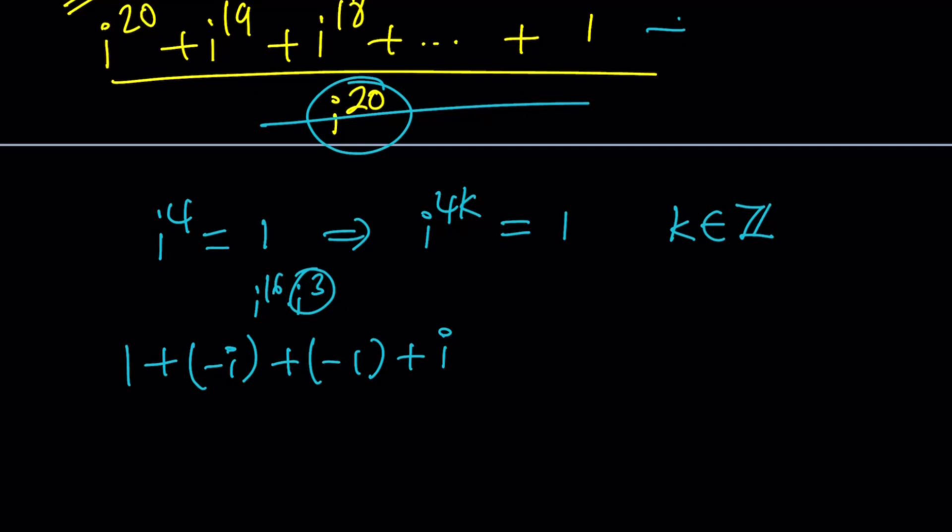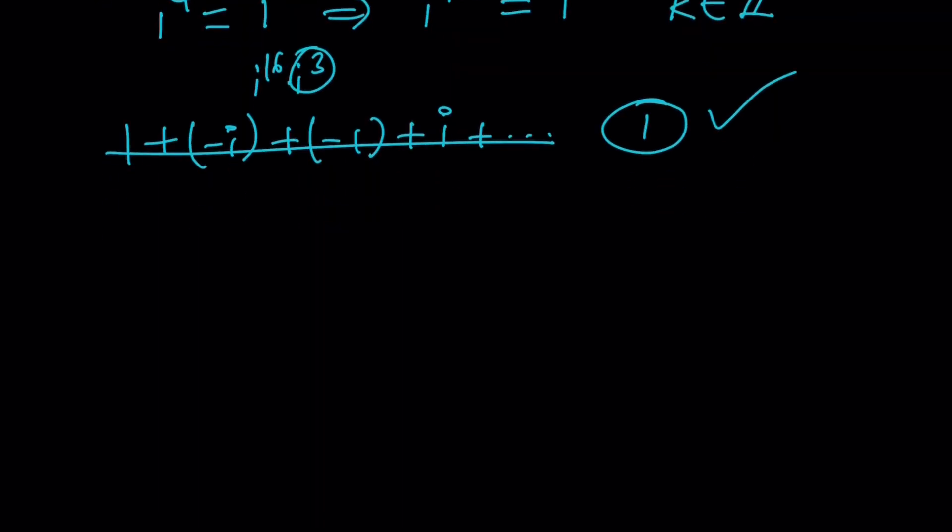We do have how many terms? 21 terms. That means we're going to have a leftover and where is that going to be? One of the end points. It doesn't matter which one but in this case I can go with 1 because it's easier. Therefore this whole sum is going to equal 1 over 1 or just 1. Makes sense? Okay cool. That is the first method.